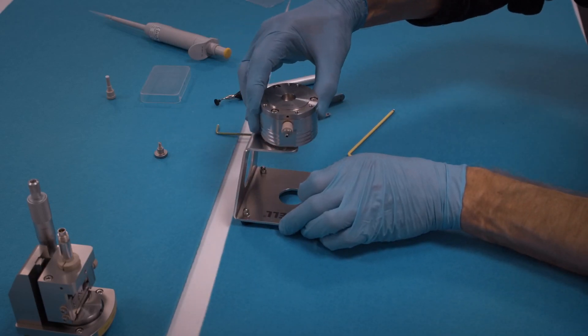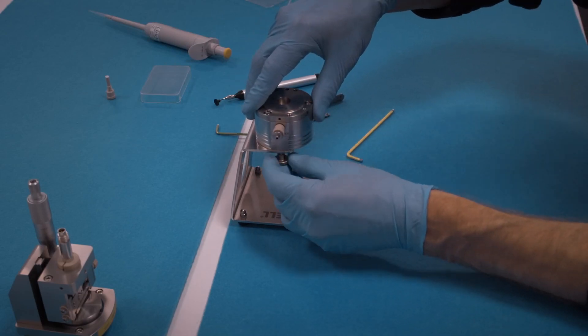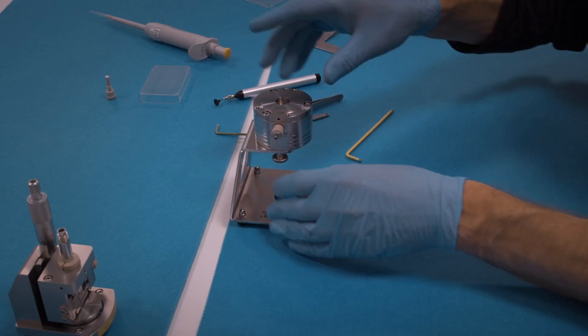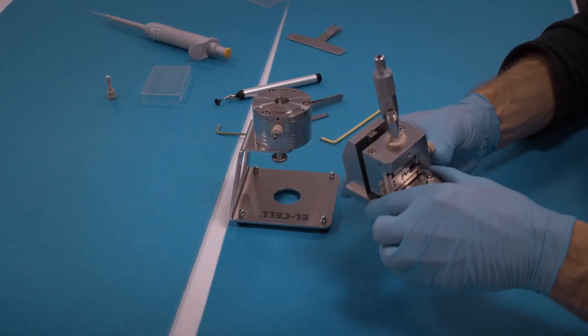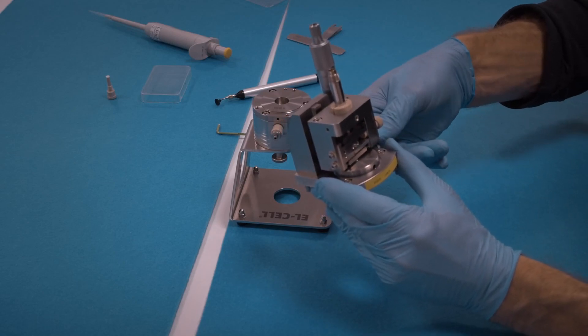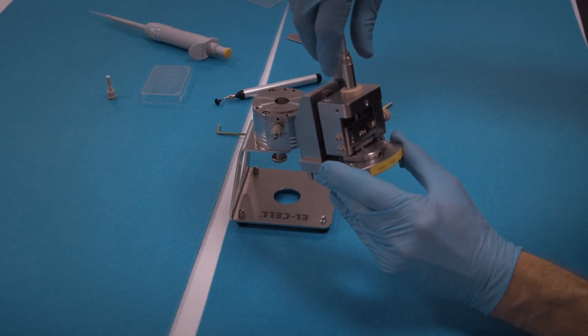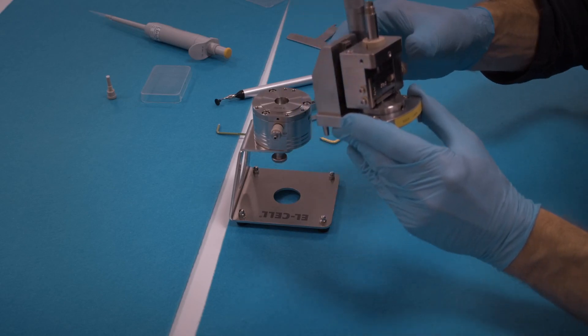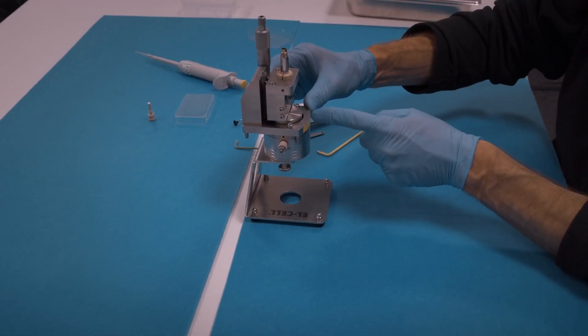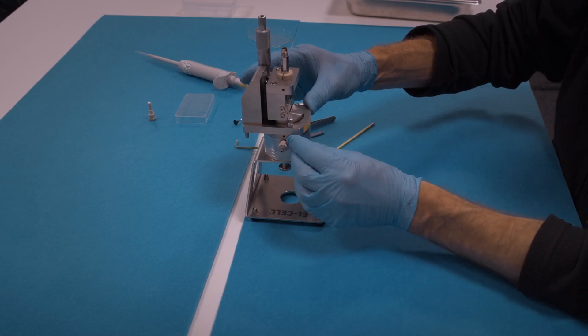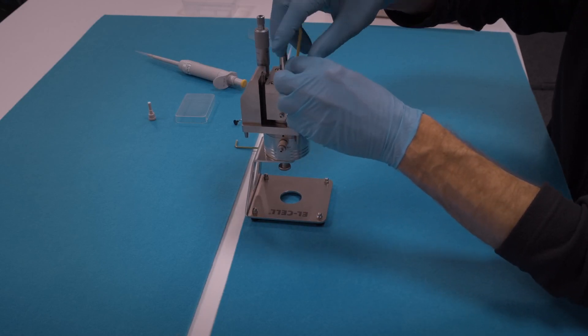Attach the cell to the cell stand. At this point you can remove the cell from the glove box and continue work outside the glove box. We now attach the sensor unit. First make sure that the sensor stage is in the utmost position. Release the stage and bring it up by turning the micrometer screw, then attach on the base. Watch the alignment here in front, and then tighten the screws.